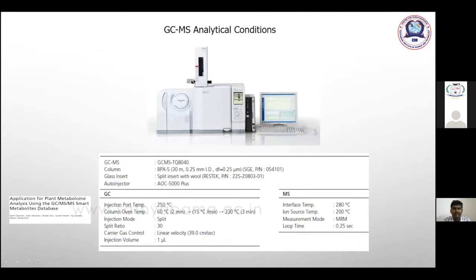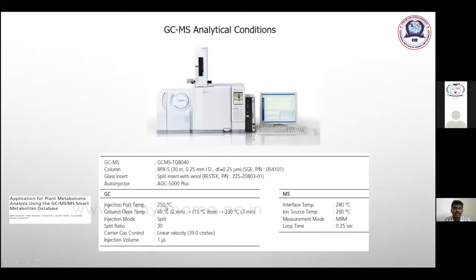The injection port temperature should be 200–300°C so that whatever you inject gets vaporized. The vaporized sample is then pushed through the column. The injection temperature is typically 250°C. For the column oven temperature, a temperature program is used — for example, starting at 60°C, holding for 2 minutes, then increasing at 15°C per minute up to 330°C, then holding at 330°C for 3 minutes.